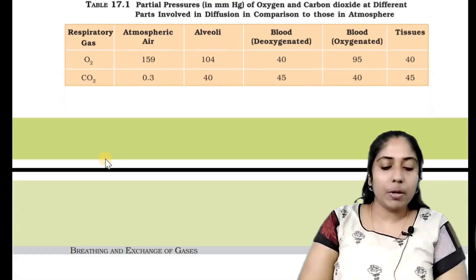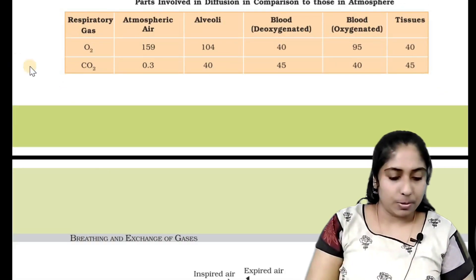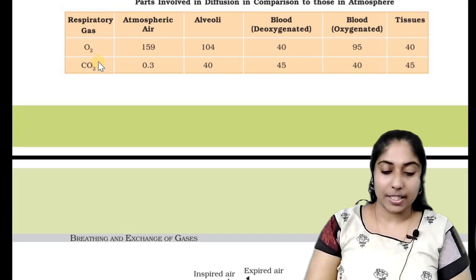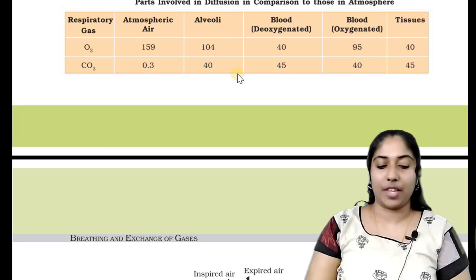If you have to look at this table, the values are 40 for oxygenated blood and 40 for tissues.